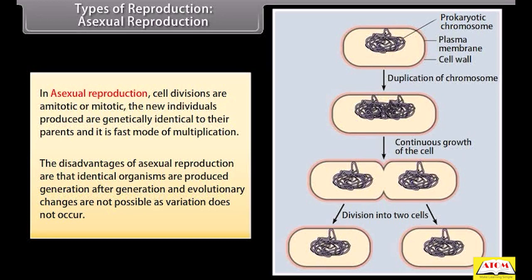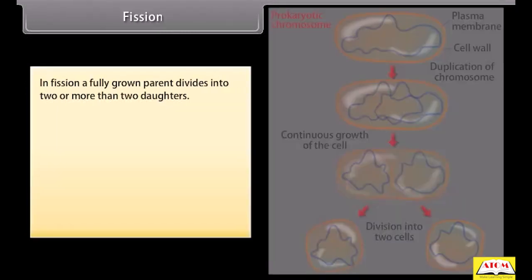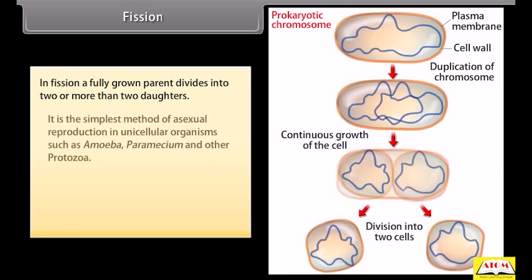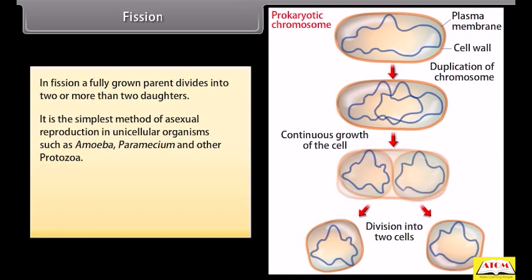In fission, a fully grown parent divides into two or more daughter cells. It is the simplest method of asexual reproduction in unicellular organisms such as amoeba, paramecium, and other protozoa.